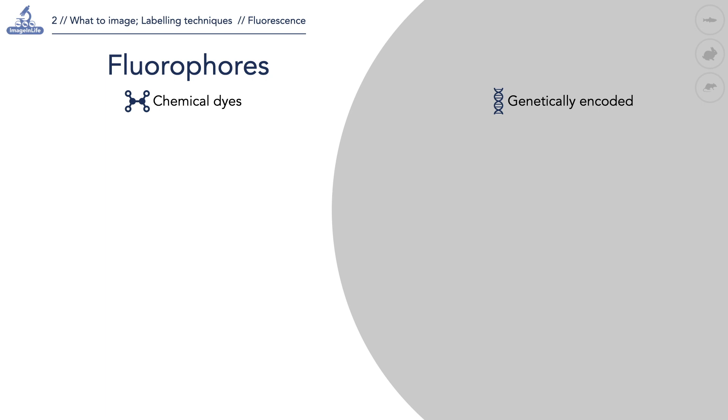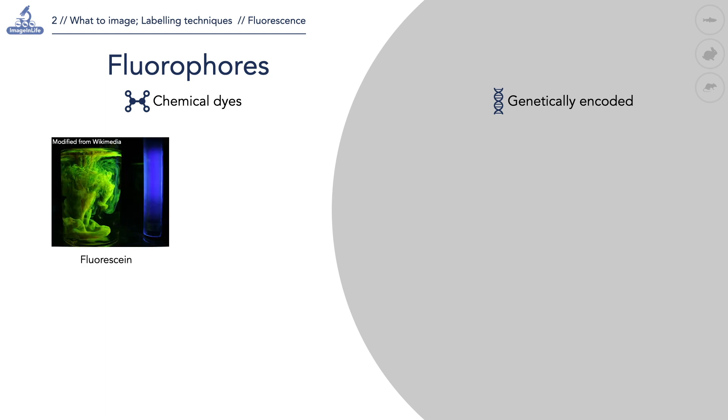Chemical dyes can be organic compounds such as fluorescein. Fluorescein is commonly used as a cell tracer or as a marker of biological structures when attached to specific molecules. Chemical fluorophores can also be synthesized.